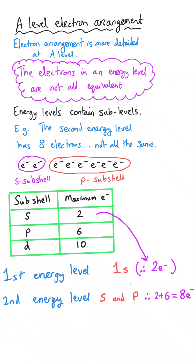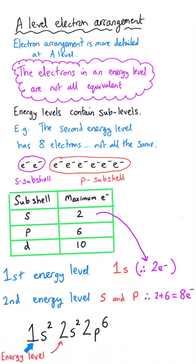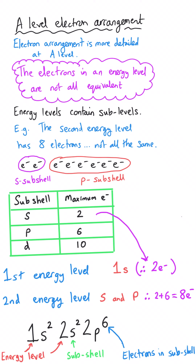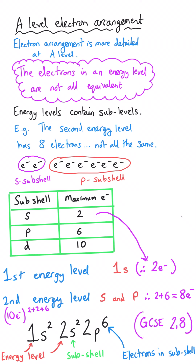The rules are quite similar to GCSE in that you fill one sub-shell before moving on to the next. At A-level, an electron configuration might look like: 1s², 2s², 2p⁶. The large number tells us what energy level the electrons are in, the letter tells us the sub-shell, and the superscript number tells us how many electrons are in that sub-shell. So 2p⁶ means the second energy level, p sub-shell, with six electrons. With two plus two plus six, that's a total of ten electrons — so we're talking about neon, which has an atomic number of ten. Those eight electrons that at GCSE would have been written as '2, 8' are no longer all the same, so we need this additional language to show they are different.